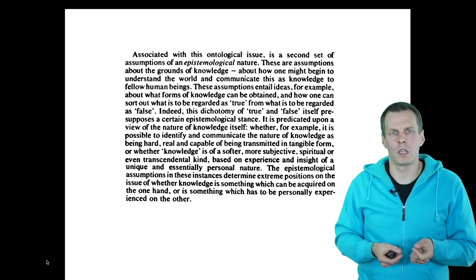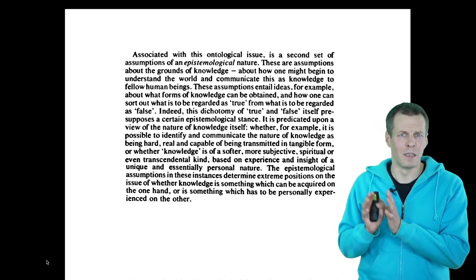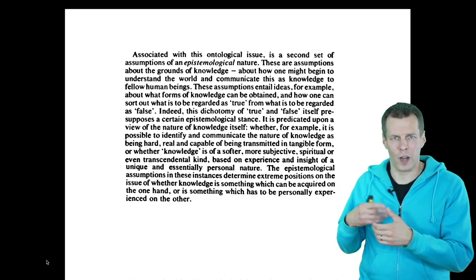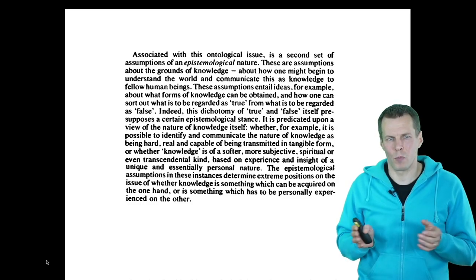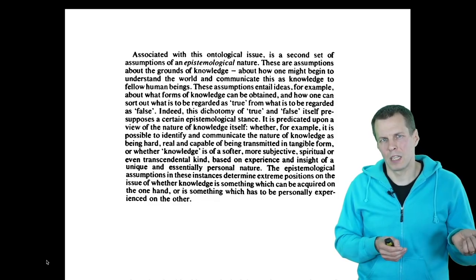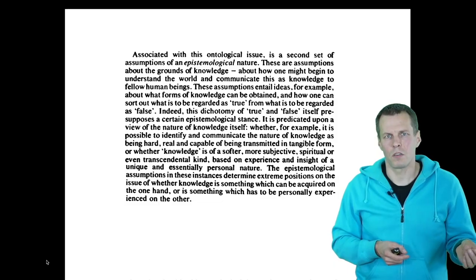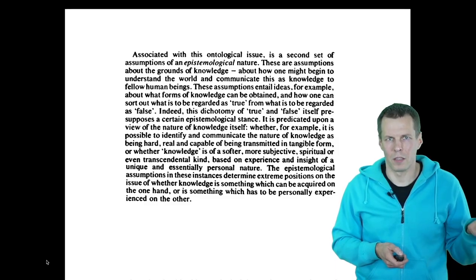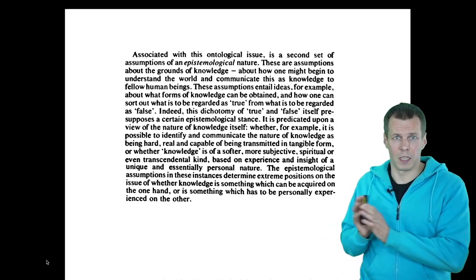Then we have epistemology, which deals with the nature of knowledge. What is knowledge? How can we claim that we know something? How can we produce knowledge? The objective ideal follows more of a natural science model where we run experiments, do large-scale studies, and try to build generalizable models. The more subjective approach holds that knowledge is relative to a particular situation — we try to produce knowledge that is subjective and might not be general in the same way.